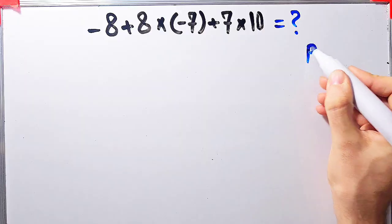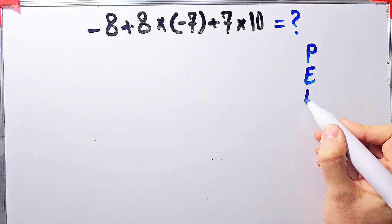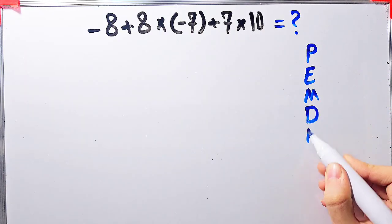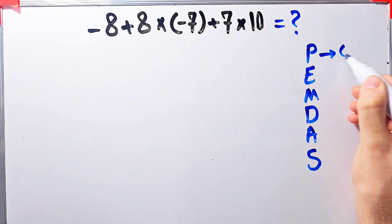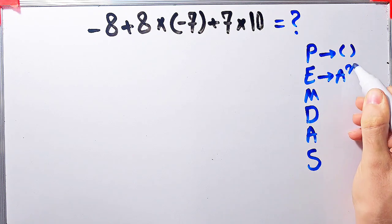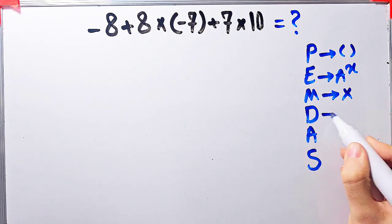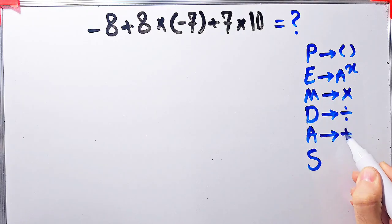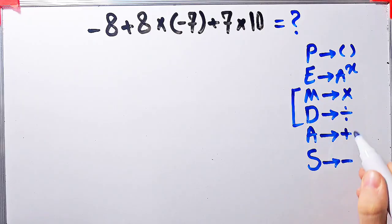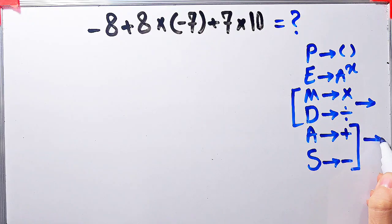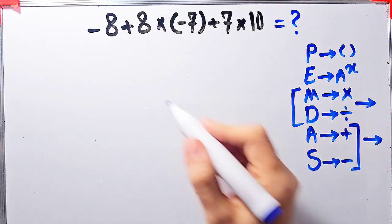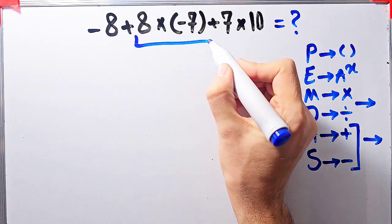Let's solve this step by step. In this question we have addition and multiplication. To solve it we follow PEMDAS: P for parenthesis, E for exponent, M for multiplication, D for division, A for addition, S for subtraction. Multiplication and division have the same priority; addition and subtraction have the same priority — when both appear, we start from the left. First we simplify the multiplication: 8 times negative 7 equals negative 56.